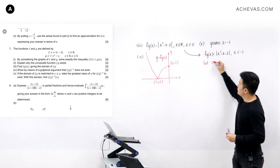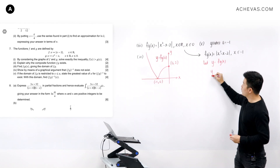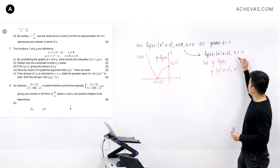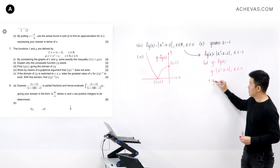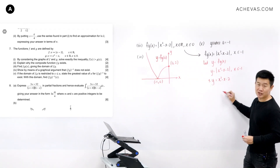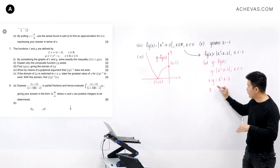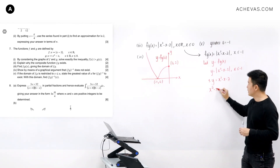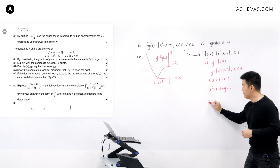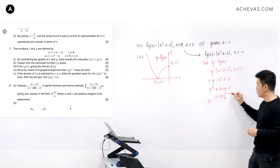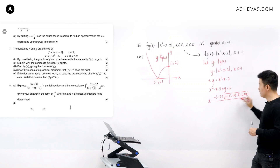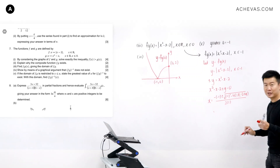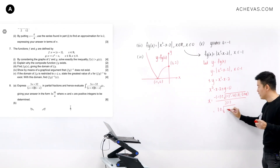Going through the usual process by letting y equal to fg(x), y is equal to the modulus of x squared minus x minus 2, where x is less than or equal to minus 1. In order to make x the subject by removing the modulus, it gives plus or minus y equal to x squared minus x minus 2. Applying the quadratic formula — bringing y to the other side — we get 1 plus or minus the square root of 9 plus or minus 4y, all divided by 2.